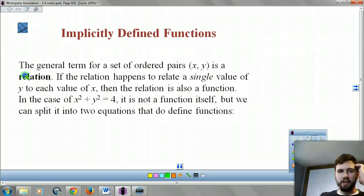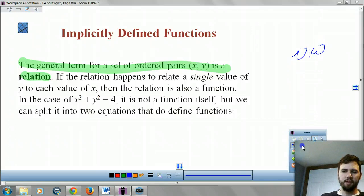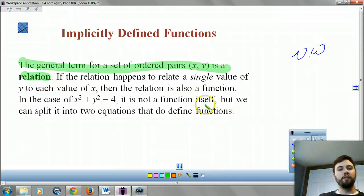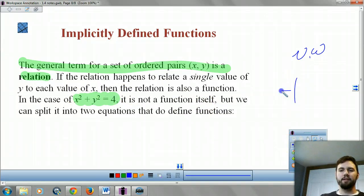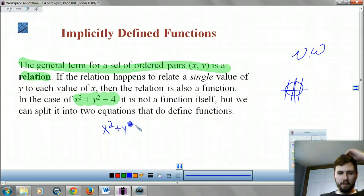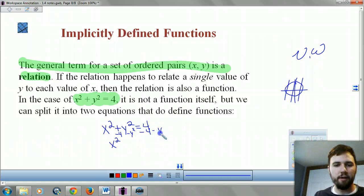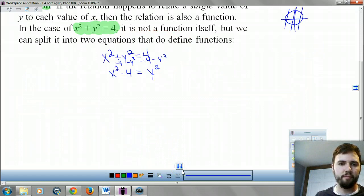So let's try to take this relation. That's a general term for set of ordered pairs. Don't worry. Don't worry. Let's multiply. And let's make it into a function. Let's take a look at this equation. That's a circle, right? That's not a function. It fails the vertical line test. Let's make it into two functions, though. So what you do is you solve it. So I subtract my 4 and subtract my y squared. So I get x squared minus 4 equals y squared.